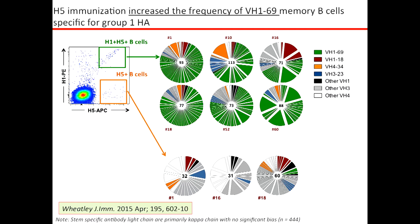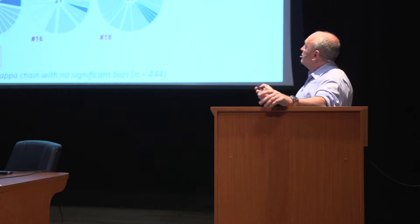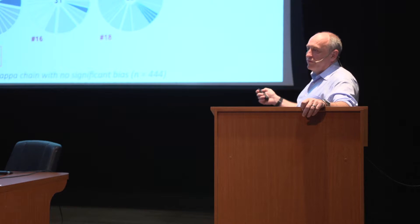In a cohort of individuals that received the group 1 H5N1 vaccine, we see that VH1-69 appears in all individuals — each pie represents a different clonal family, but they all use VH1-69 to recognize the stem. That's not the case for the head-specific response, where there's no predominance of a single heavy chain. The take-home message is that for a group 1 influenza immunogen, the stem region response uses VH1-69.